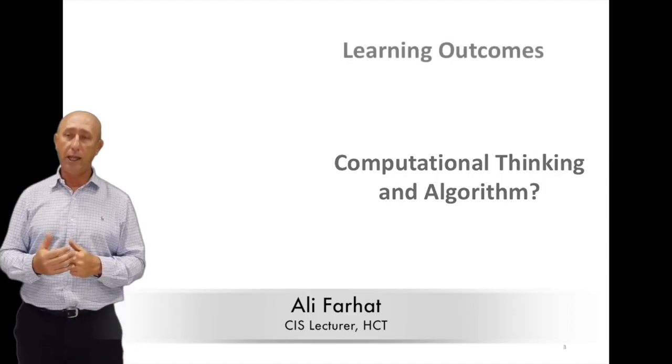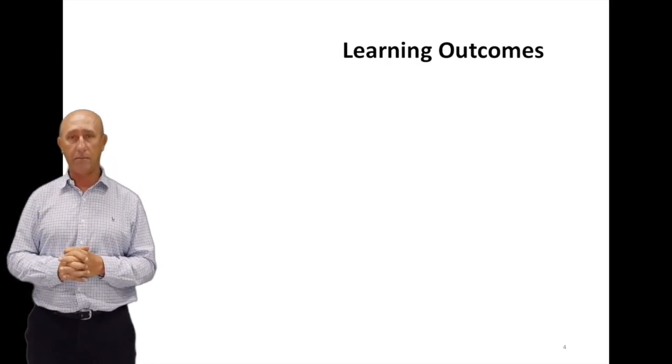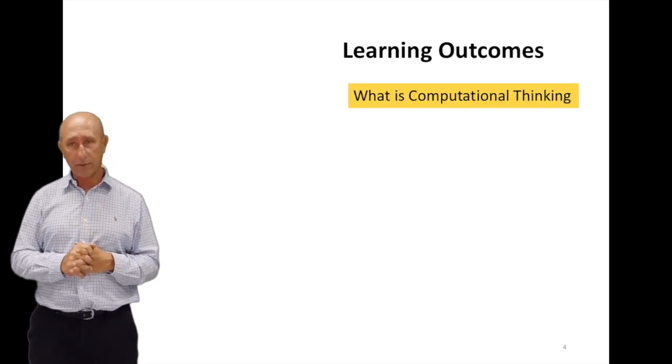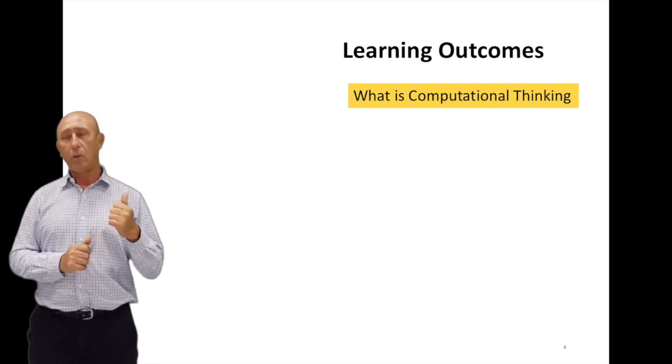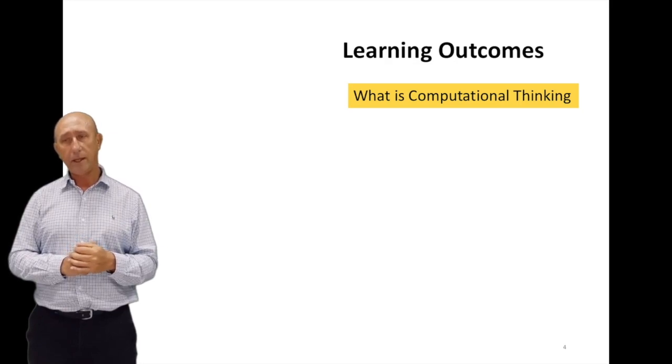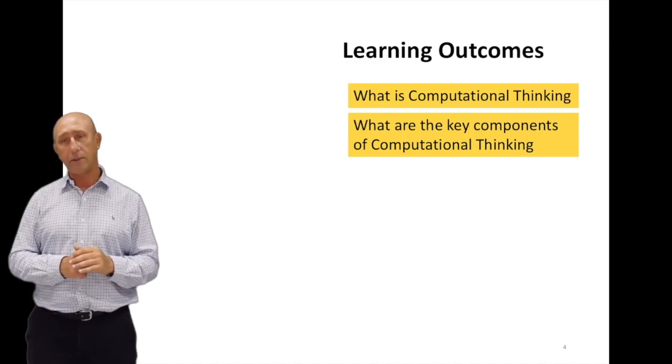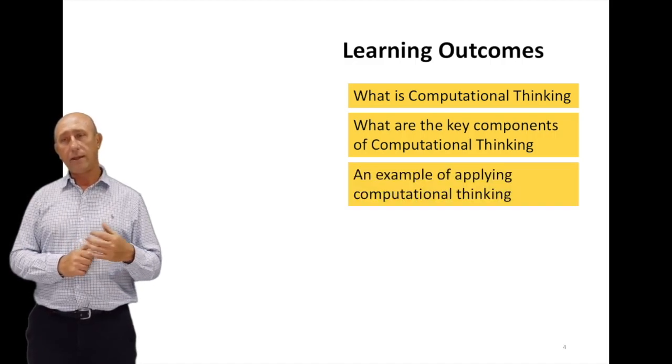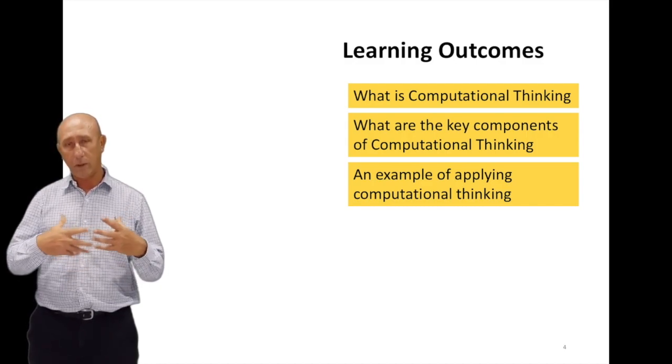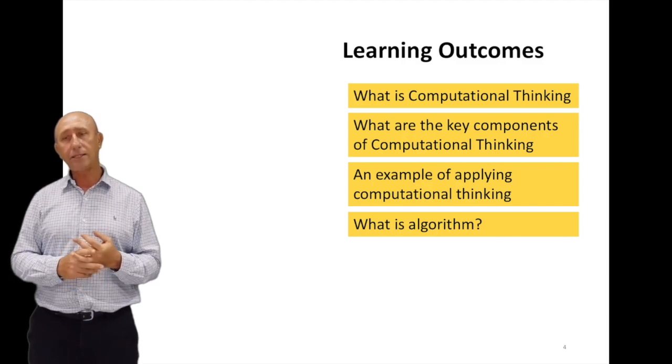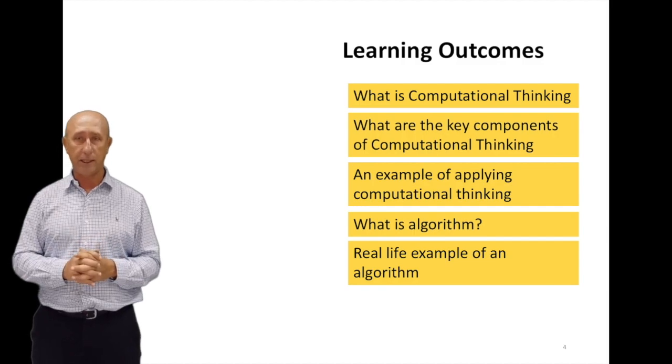So the main focus of this is computational thinking and algorithm. We have different learning outcomes. The first learning outcome is what is computational thinking. The second part is the key components of computational thinking. The third part is applying different examples to explain what is computational thinking. And the last part is that we look at algorithms and real-life examples in algorithms.